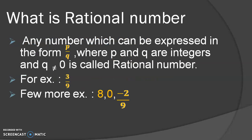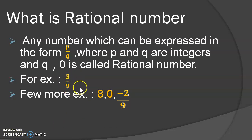Now let us know what is a rational number. The simplest definition of a rational number can be: any number which can be expressed in the form P upon Q is called a rational number. You will think that P upon Q is a fractional number — yes, it is a fractional number, but it can also be said as the rational number. Here, the denominator Q can never be 0 because any number divided by 0 becomes not defined. For example, 3 upon 9 is a rational number and its denominator is a non-zero number.